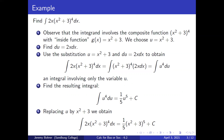We use the substitution u equals x squared plus three and du equals 2x dx to obtain the integral of 2x times x squared plus three raised to the fourth power dx, equals the integral of x squared plus three to the fourth power times 2x dx, equals the integral of u to the fourth du — an integral involving only the variable u.